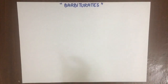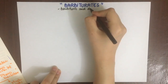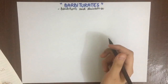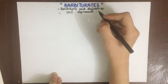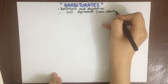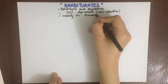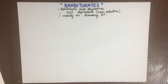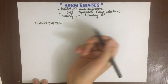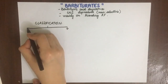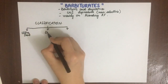Let's talk about barbiturates. All barbiturates are derivatives of barbituric acid and they are non-selective CNS depressants. They act at many sites, but the ascending reticular formation is the main site of their action. To classify barbiturates, we classify them into three main groups: ultra-short-acting barbiturates, short-acting, and long-acting.